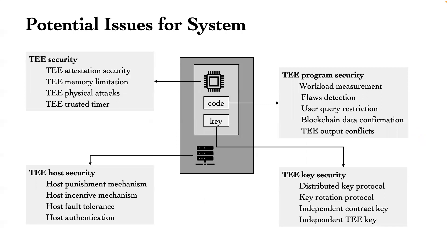For security considerations, we give discussions from the following aspects. TEE host security covers punishment and incentive mechanisms, fault tolerance, and authentication — targeting the host level. TEE hardware security covers attestation, memory, timer, and related physical attacks. TEE program security covers workload measurement, flow detection, priority restriction, chain data confirmation, and output conflicts — targeting the code level. TEE key security covers distributed keys, key rotation protocols, independent contract keys, and independent TEE keys — targeting the key level.